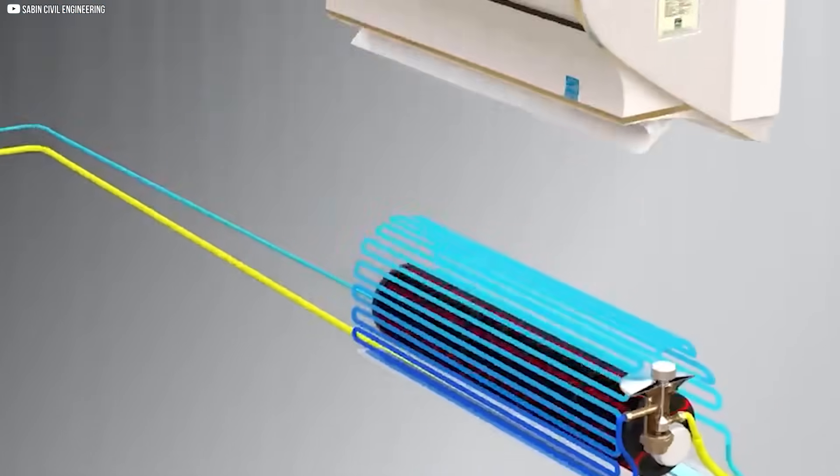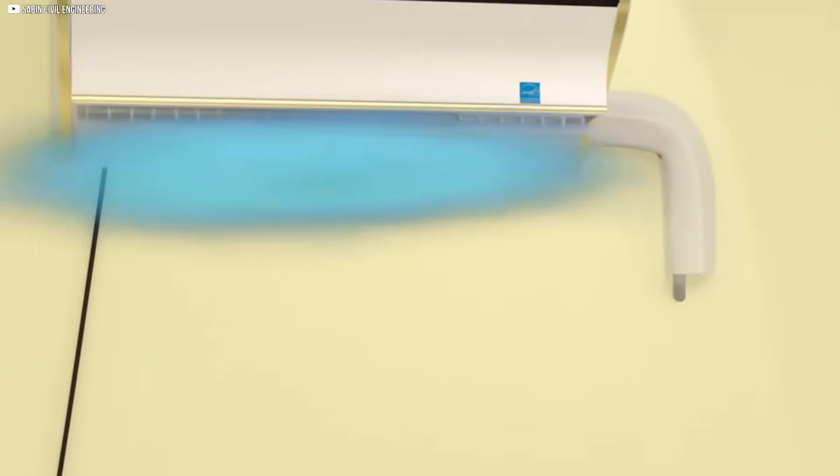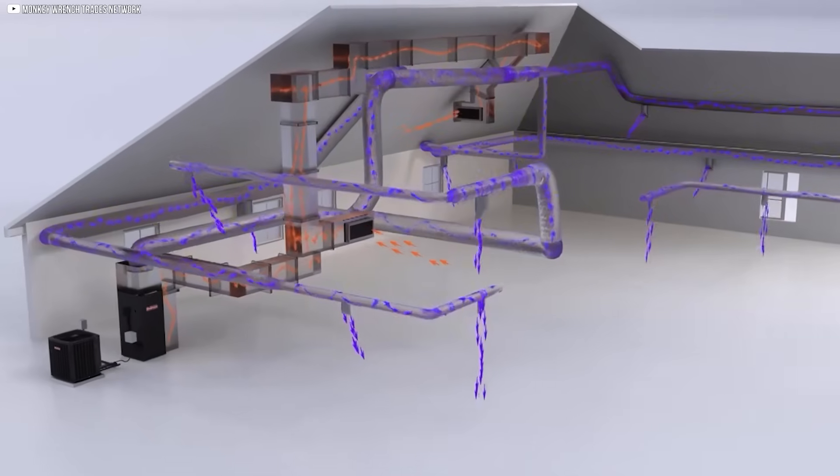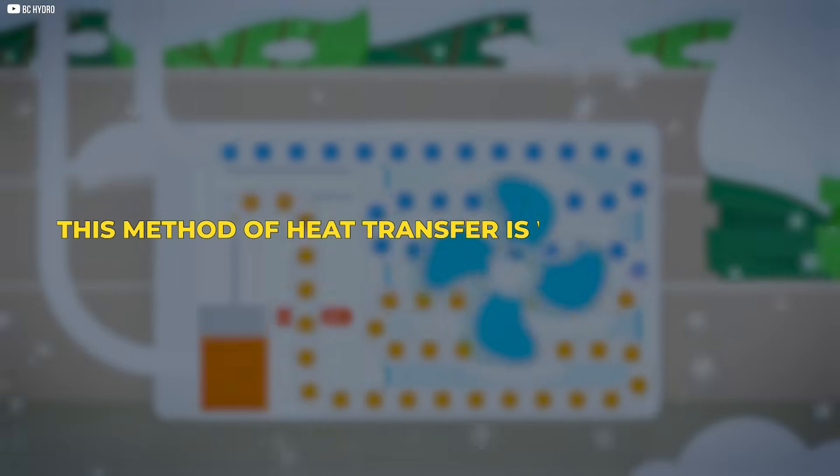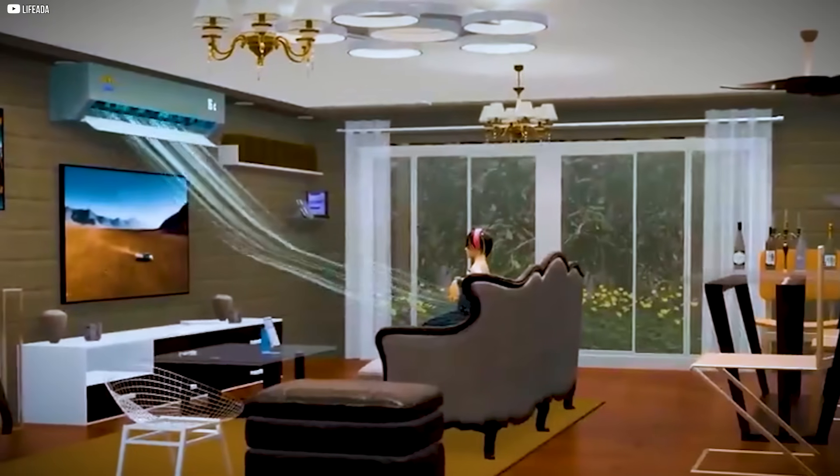Even at temperatures well below freezing, the air still contains thermal energy. And the heat pump's refrigerant absorbs this heat, turning it into gas, which is then transferred indoors. This method of heat transfer is why heat pumps can achieve efficiencies greater than 100%.